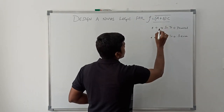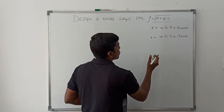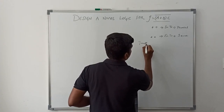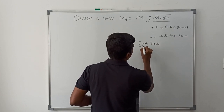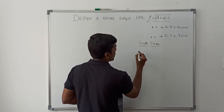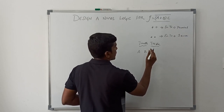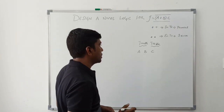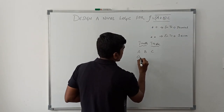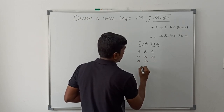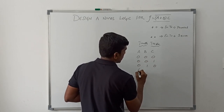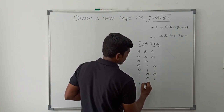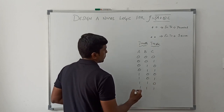Before drawing the circuit, I will first write the truth table for the given boolean expression to verify the result. In this boolean expression it has three variables A, B, and C. These three variables make eight combinations of input: 000, 001, 010, 011, 100, 101, 110, and 111.